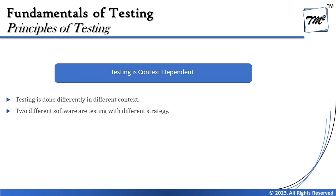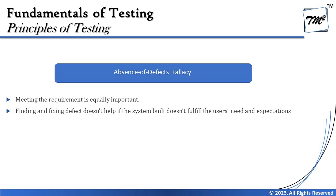Principle number six: testing is context dependent. There is no universally accepted approach or single strategy to test all types of applications. As products differ from each other, the strategy to test them should also differ. For example, a safety-critical system — such as automotive, elevators, or escalators where human lives are involved — is not tested the same way as an e-commerce website. The approach of testing varies completely between different product types. We'll discuss this in more detail in Chapter Five.